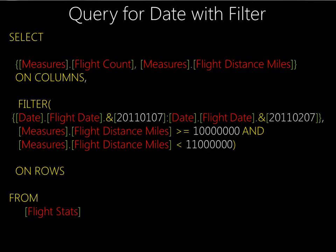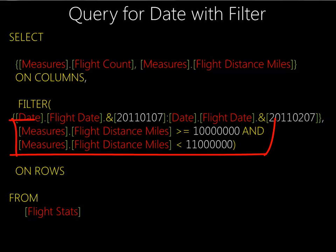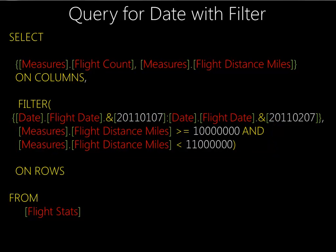To filter on the flight distance miles, which is a measure, the syntax is almost identical to SQL. You won't find this in the WHERE clause though. To do the filter, we have a function called filter, and it takes as the first parameter a set of rows, and the second parameter is an expression. So it's fairly straightforward: filter the set of dates where the distance miles is greater than 10 million but less than 11 million, and put that on rows, and then on each one of those rows put on these two columns. So you get a two-dimensional result. Let's go over and implement this, and then put it into a report to see how we would use it in a front end.